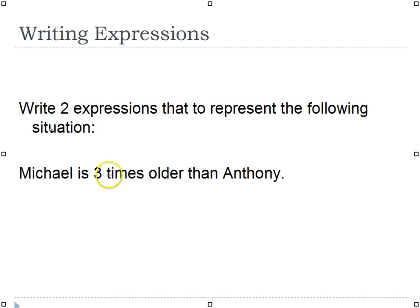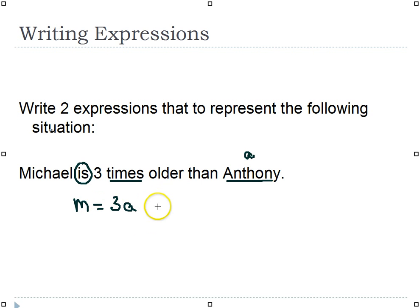For this expression there are a few key words. It says 'Michael is' — 'is' always means where the equal sign goes. We see 'three times older than Anthony.' We don't know Anthony's age, so we'll call Anthony A, and Michael M. Michael is three times older than Anthony, so whatever Anthony's age is, you'd multiply it by three — M equals 3A. I can also write this with repeated addition: A plus A plus A. Those are two different expressions to represent this situation.